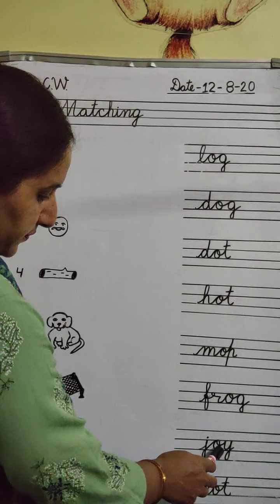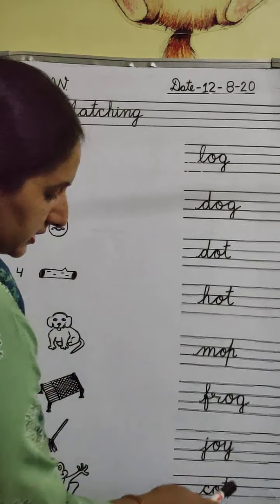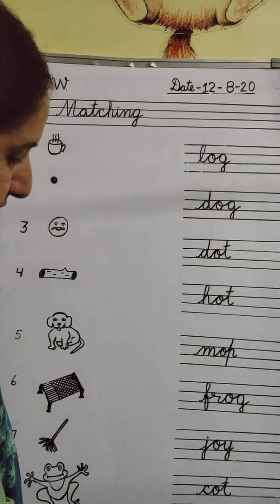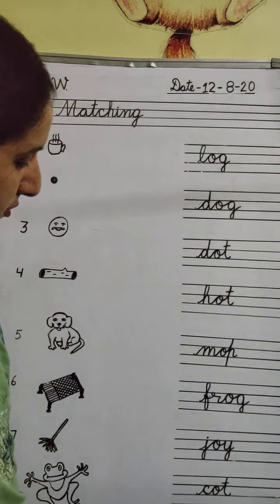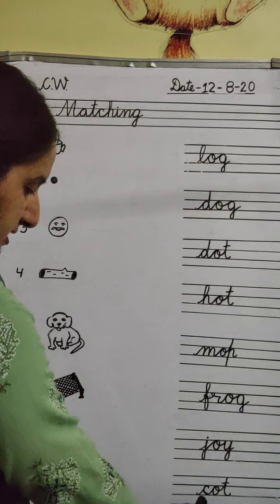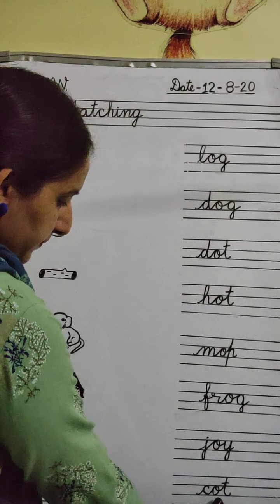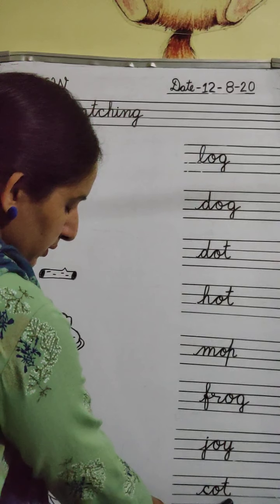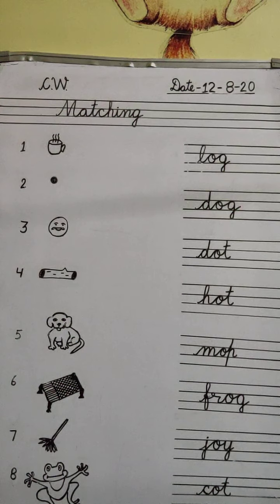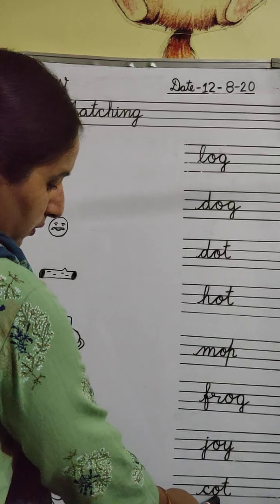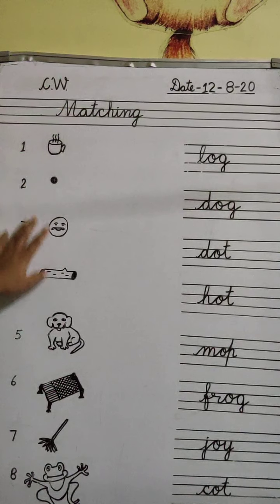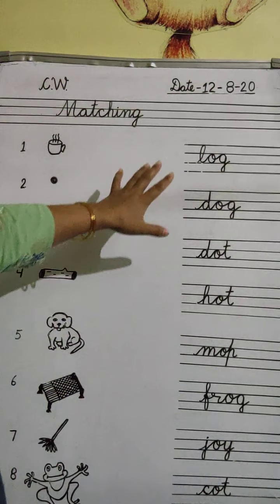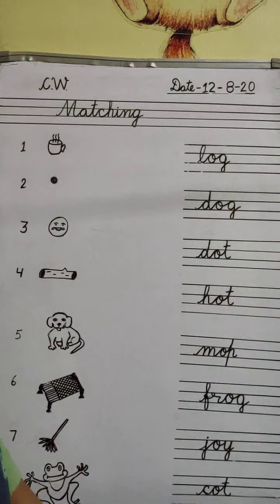Next J-O-Y, Joy. Next C-O-T, Cot. Okay. Now we have identified the pictures and we have read the spellings.